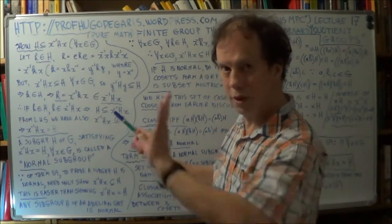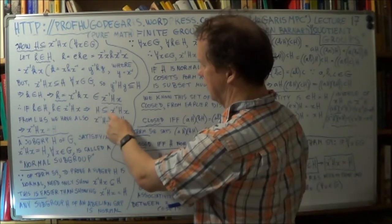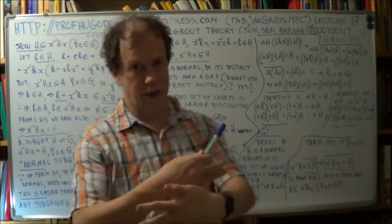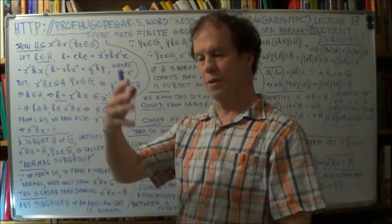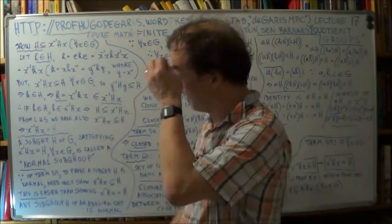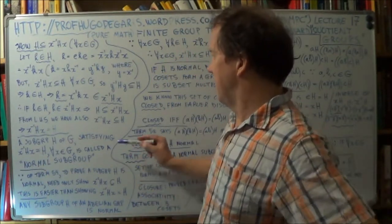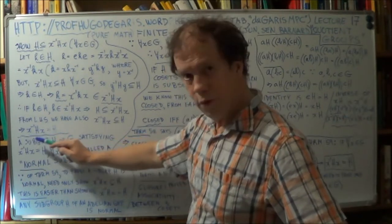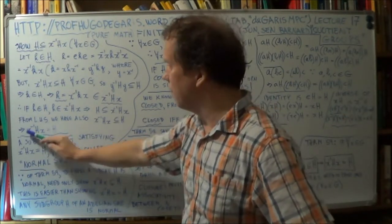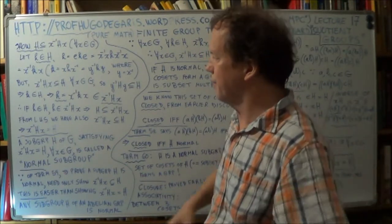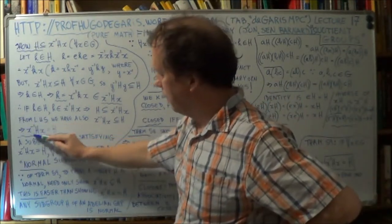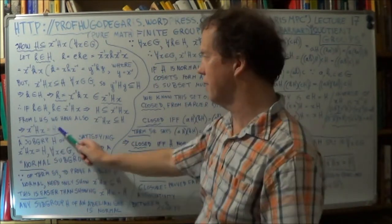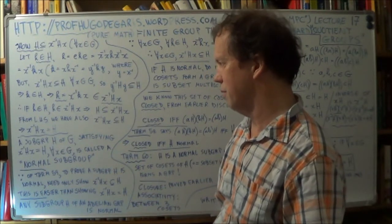Given that, and given the left-hand side — that X inverse HX is a subset of H — we put the two together: one is a subset of the other, and the other is a subset of the one. We put those two together and we get the equality. We've proved these two sets are actually equal, so we've got a stronger result — and hence we have Theorem 59. That's an important result we'll really use.